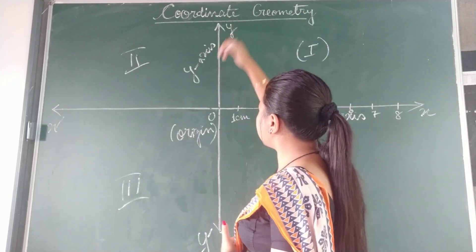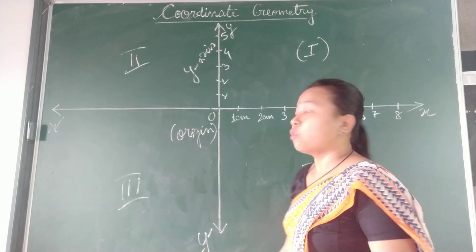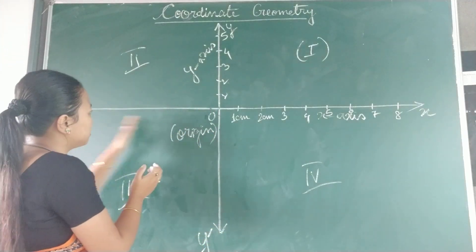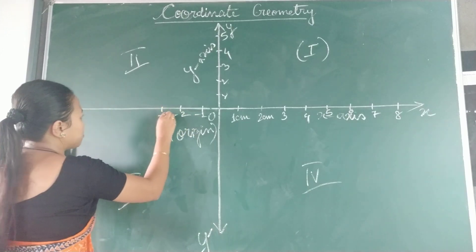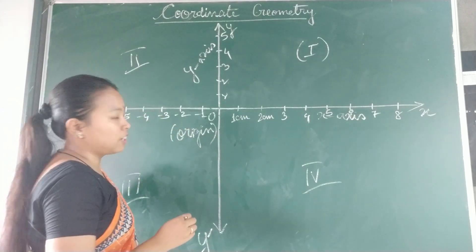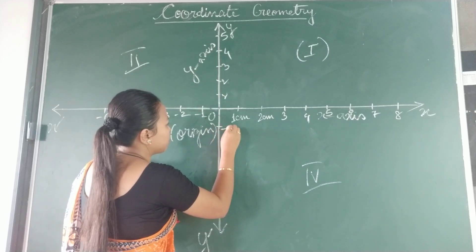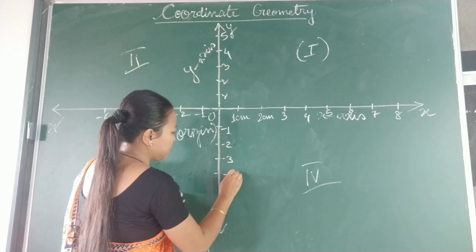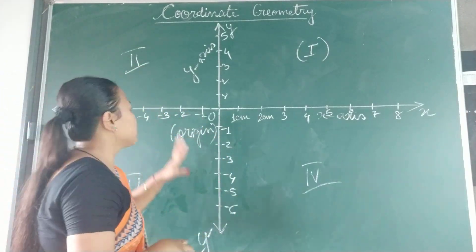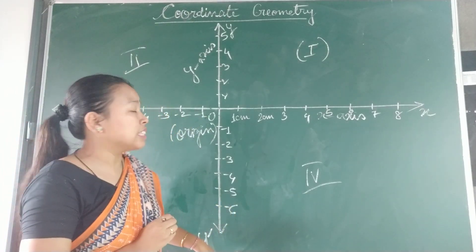Similarly, the readings also go the other way. Just like on a number line, after 0 we go to minus 1, minus 2, minus 3, minus 4, minus 5, minus 6 — the negative readings go on the left-hand side. Similarly, below the Y-axis it will be minus 1, minus 2, minus 3, minus 4, minus 5, minus 6. The X-dash side is marked as negative and the Y-dash side is also marked as negative.